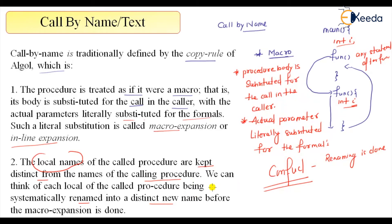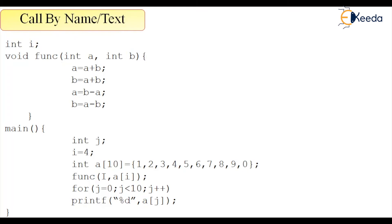So this is the call by name parameter passing mechanism — what we actually do is macro expansion. There is no function call, no control flow from caller to called function. Rather, the concept of macro expansion is going to happen.